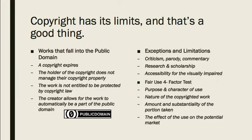Not everything is under copyright. The law states that after a certain amount of time, a copyright expires and then the work enters what is called the public domain. Once something is in the public domain, other creators can take that work, make derivatives of it, make copies of it, and use it without any penalty or paying the copyright holder. A work can enter the public domain in four ways: the copyright expires; the holder of the copyright does not renew their copyright or otherwise follow the rules to protect it; the work is not entitled to be protected by copyright law — for example, in the U.S., any work created by a federal government employee; or the creator allows for the work to automatically be part of the public domain. Creative Commons has a CC0 button that assists authors in making their work available to all without a copyright.